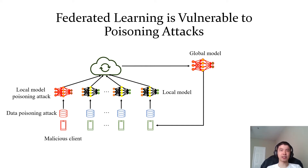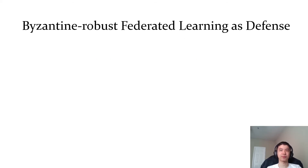Essentially, the goal of the attacker is to poison the global model. The poisoned global model makes incorrect predictions as the attacker desires. To defend against poisoning attacks, the machine learning community has developed multiple Byzantine-robust federated learning methods.